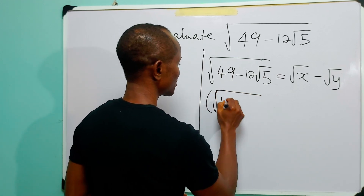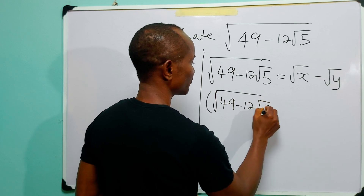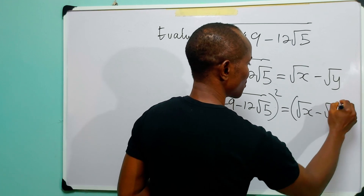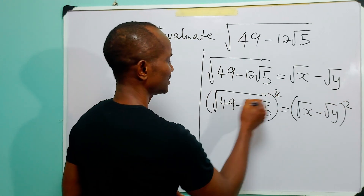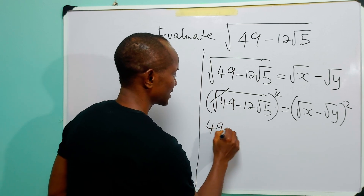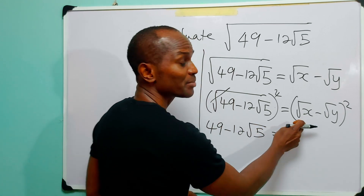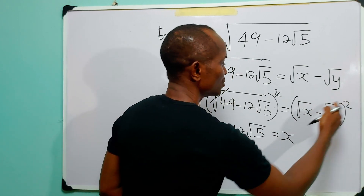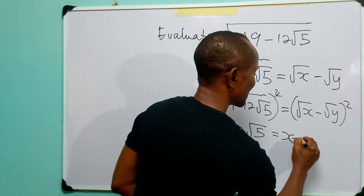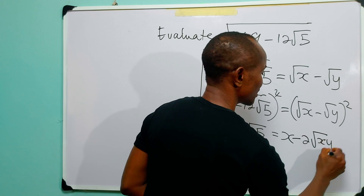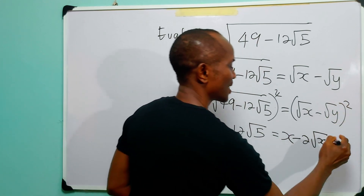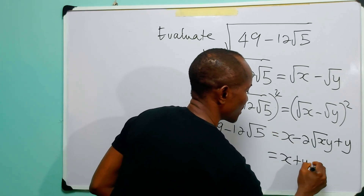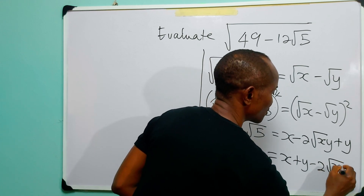So we have: root(49 minus 12 root 5) squared equals (root x minus root y) squared. This gives us that 49 minus 12 root 5 is equal to — opening this bracket — root x squared is x, 2 times root x times minus root y is minus 2 root(xy), and minus root y squared is plus y.